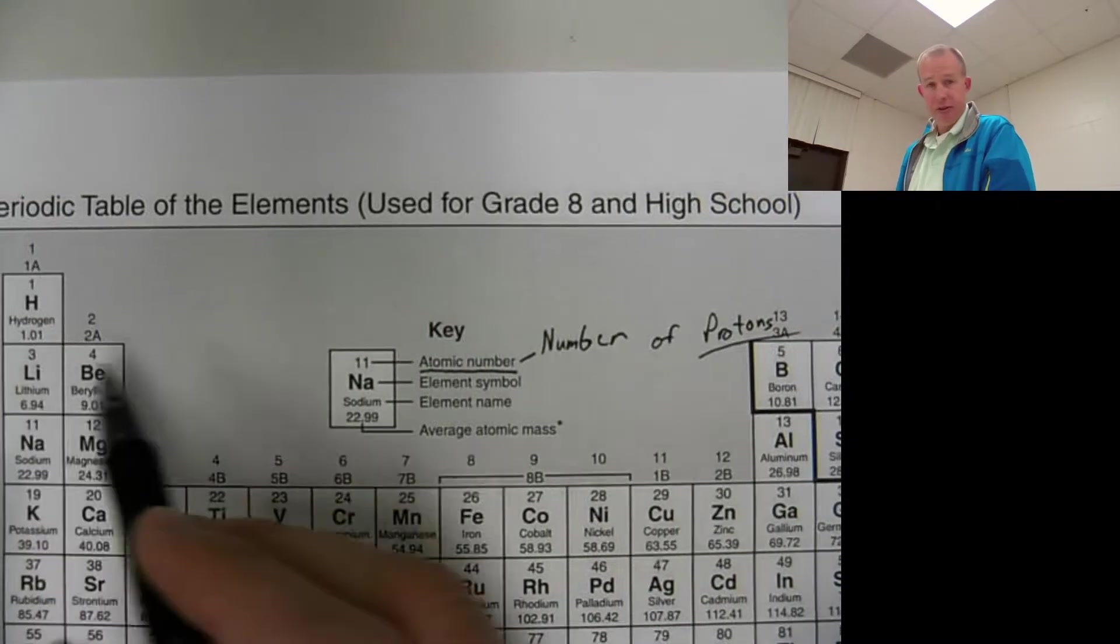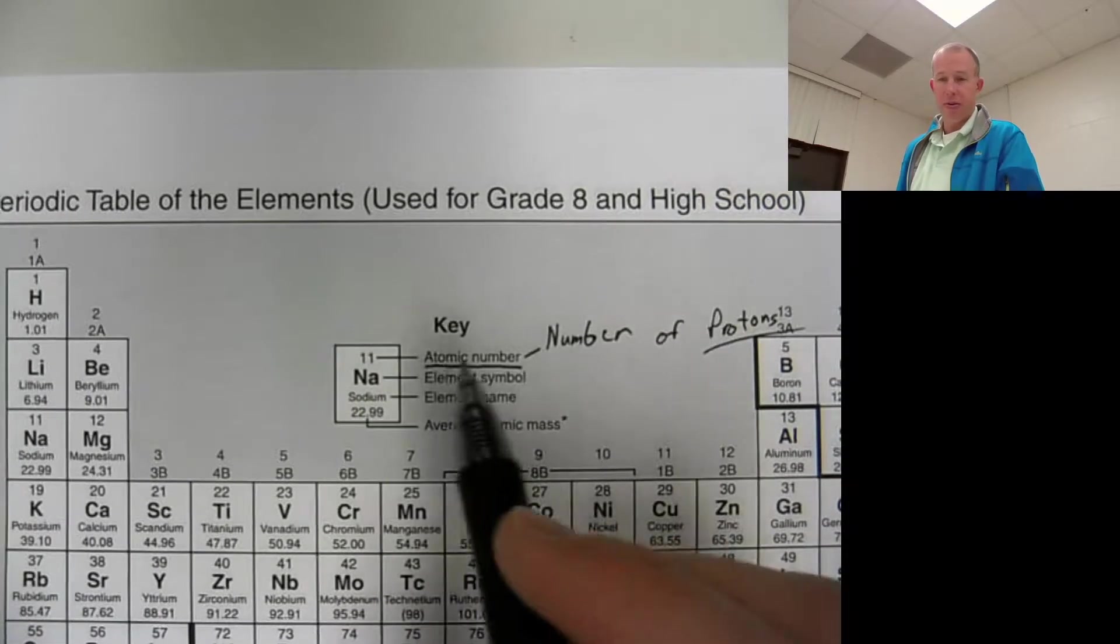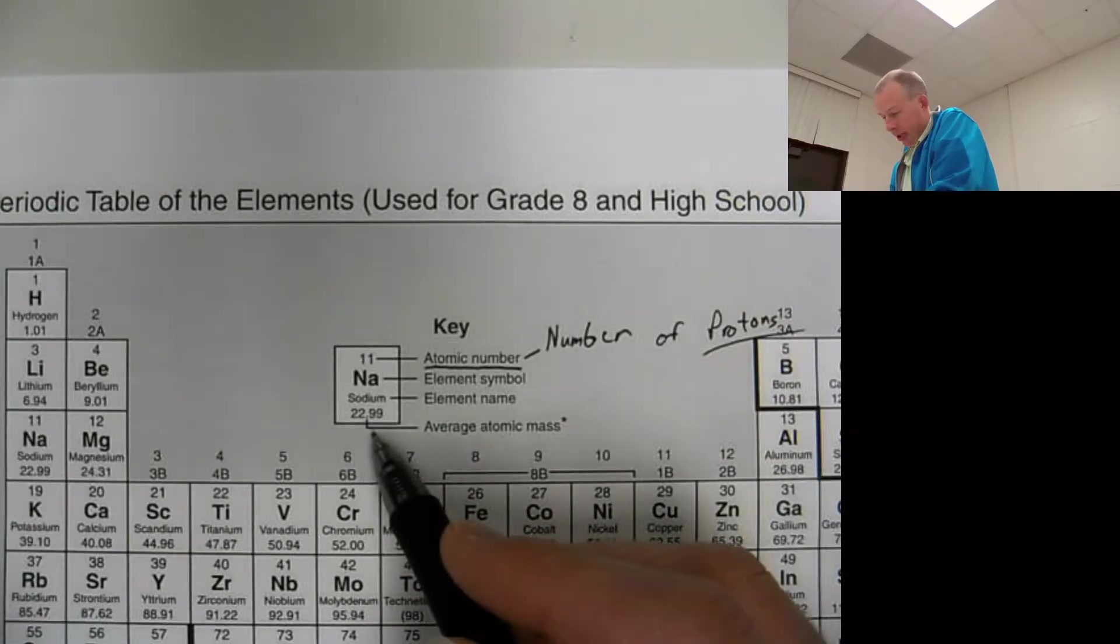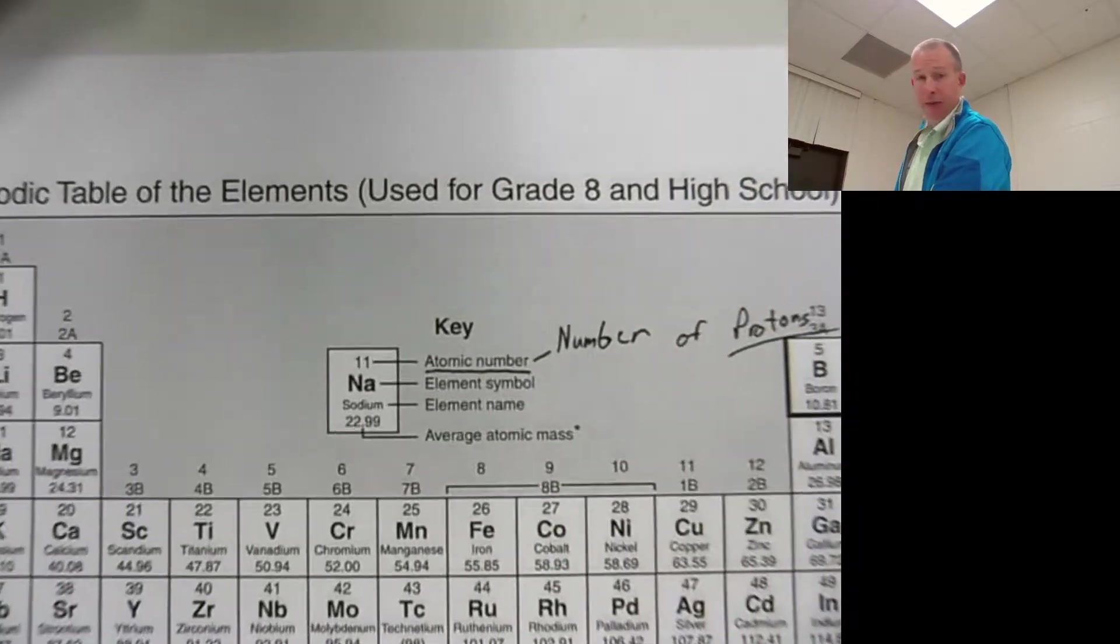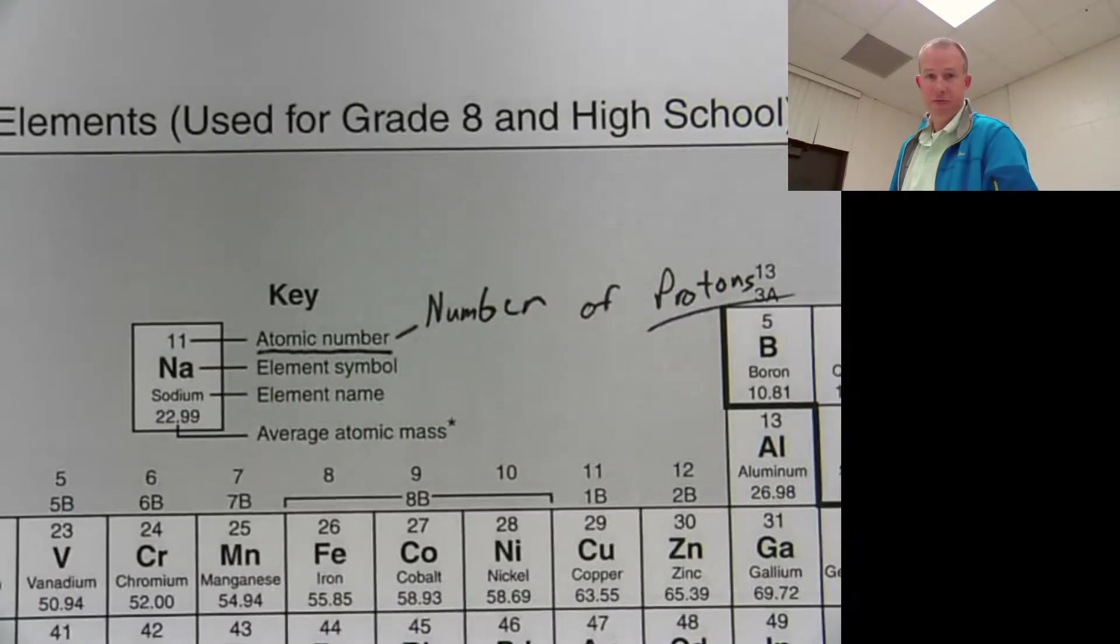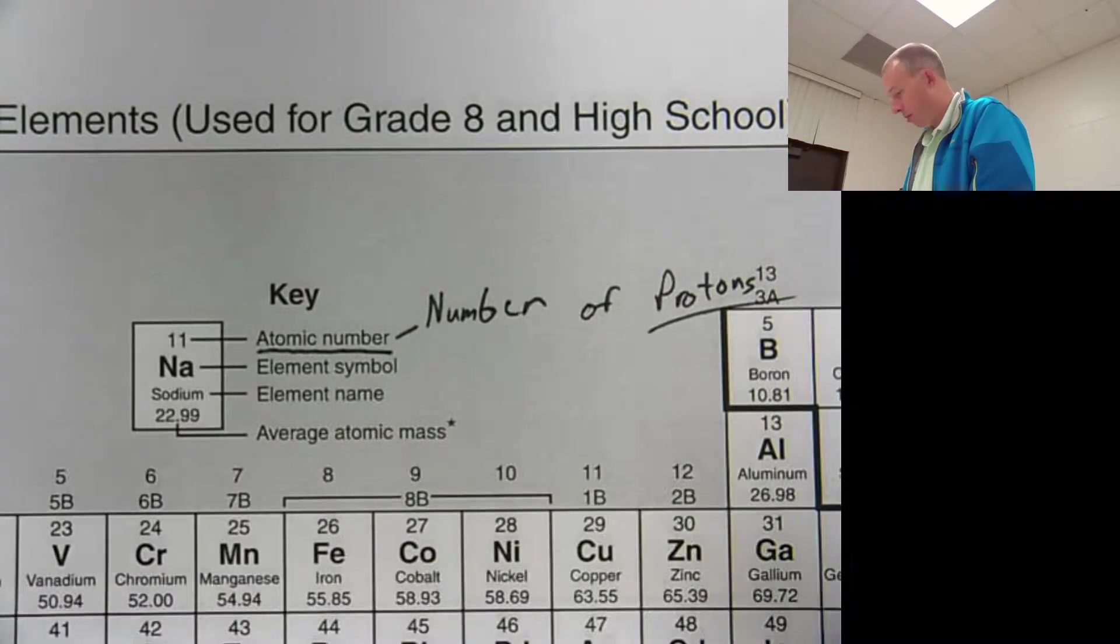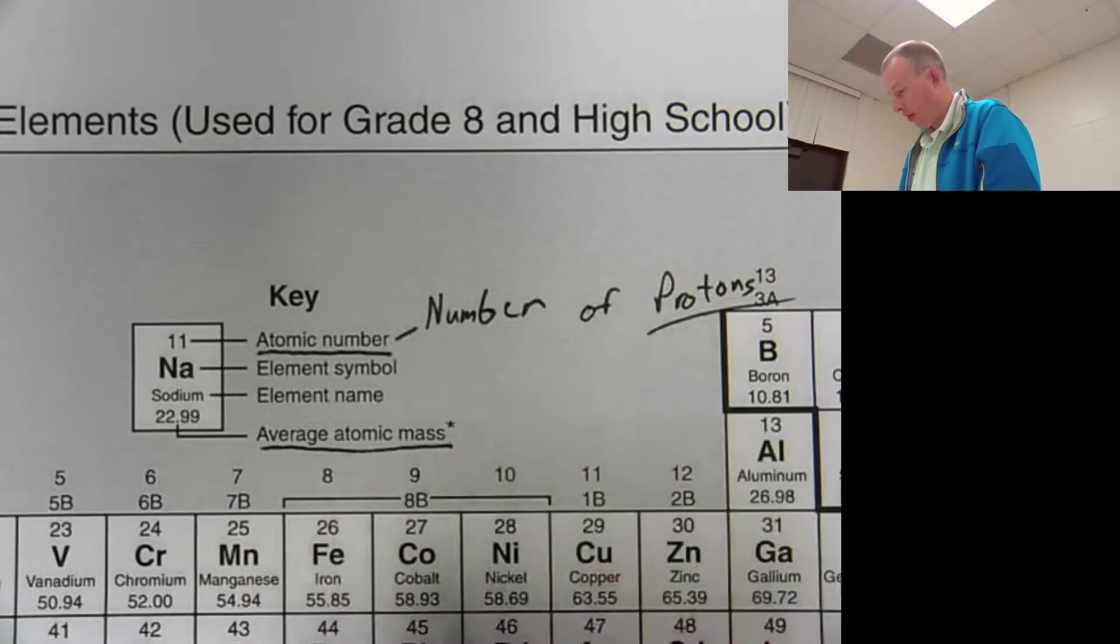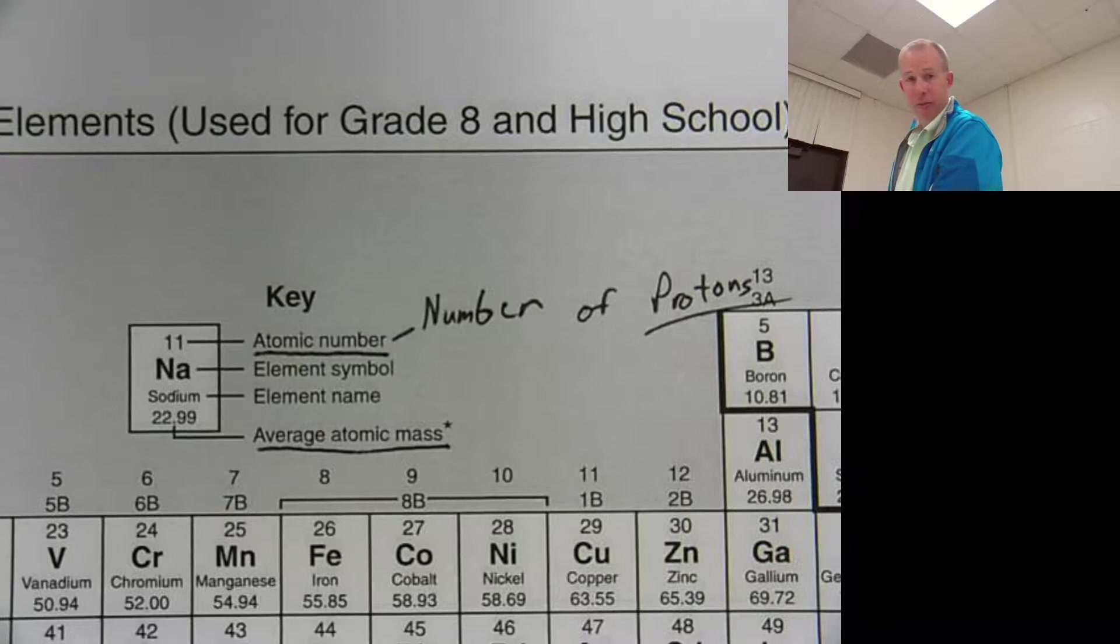So the atomic number is protons. All right, and that's a big one. So atomic number, protons. The symbol is just the symbol. It's just the symbol that you're going to see. First letter is always capital, second letter is always lowercase. Then there's this little thing at the bottom here, where it's called the average atomic mass. Right now, at this very moment, the average atomic mass is not something that you really need to worry about too much. All right, you'll notice it has a decimal, almost all of them. And we'll get into that more next week. But the average atomic mass is just there.